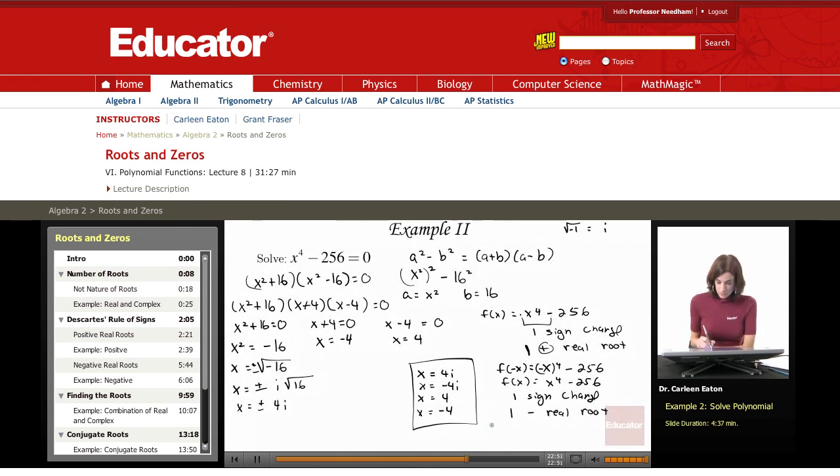Since the degree here is 4, I have 4 total roots. So this is going to leave me with one positive real, one negative real, and two complex roots, which is exactly what I see. Positive real, negative real, and a set of complex conjugates.